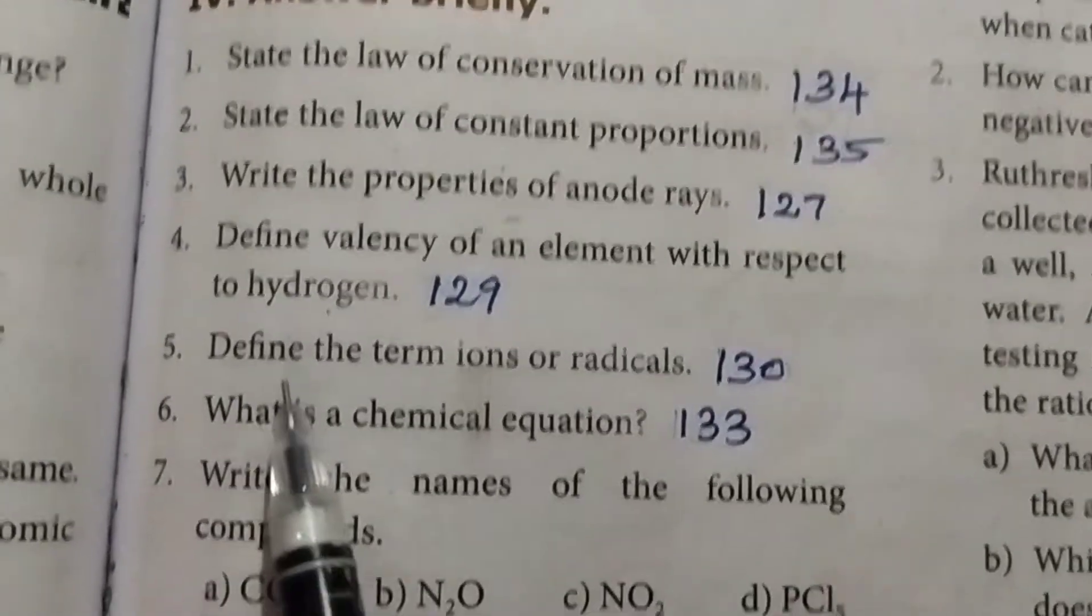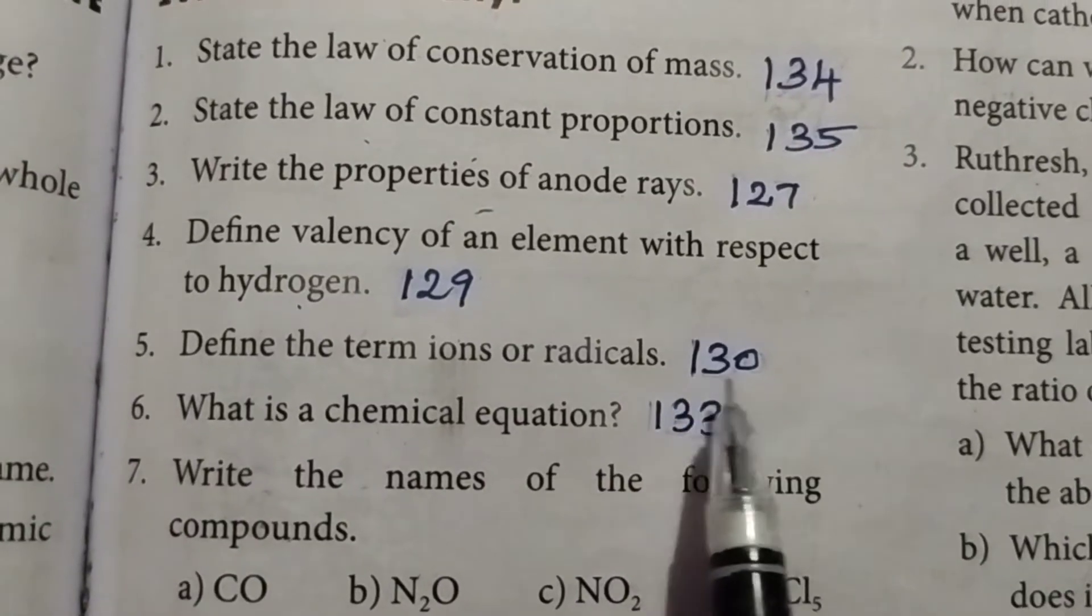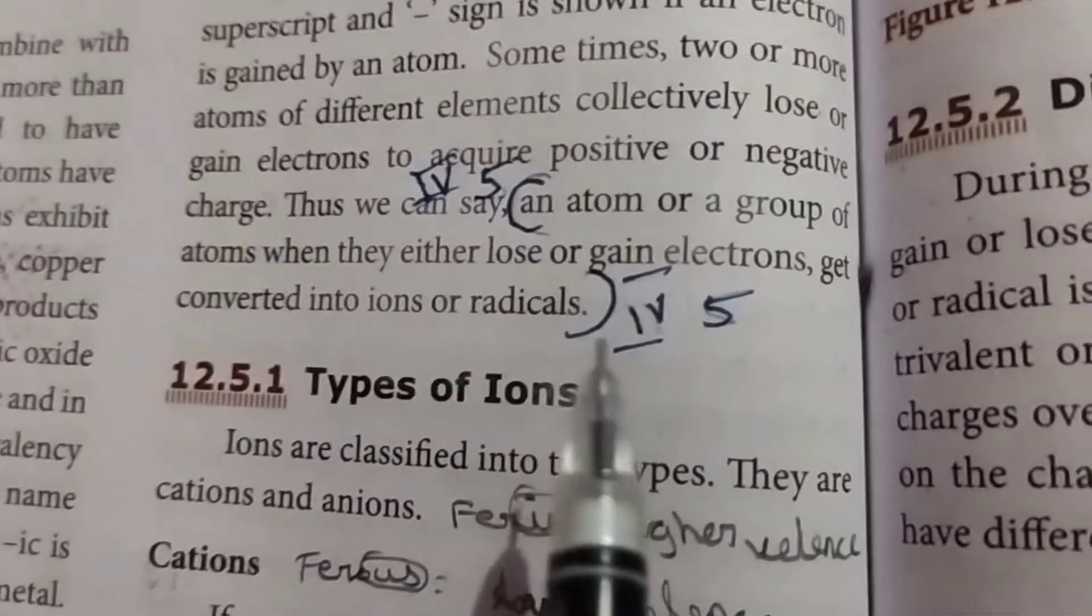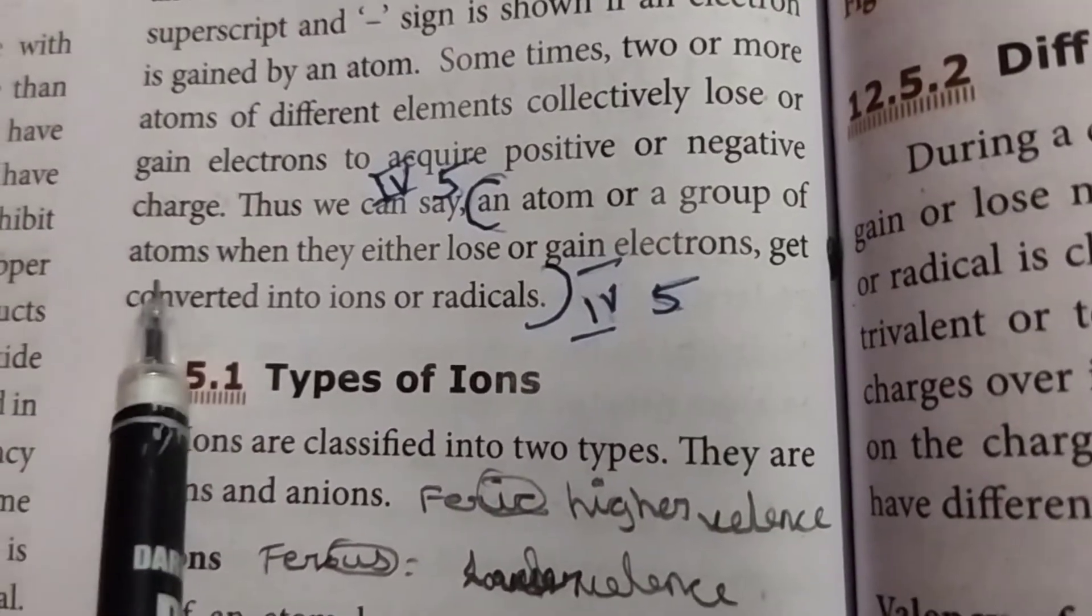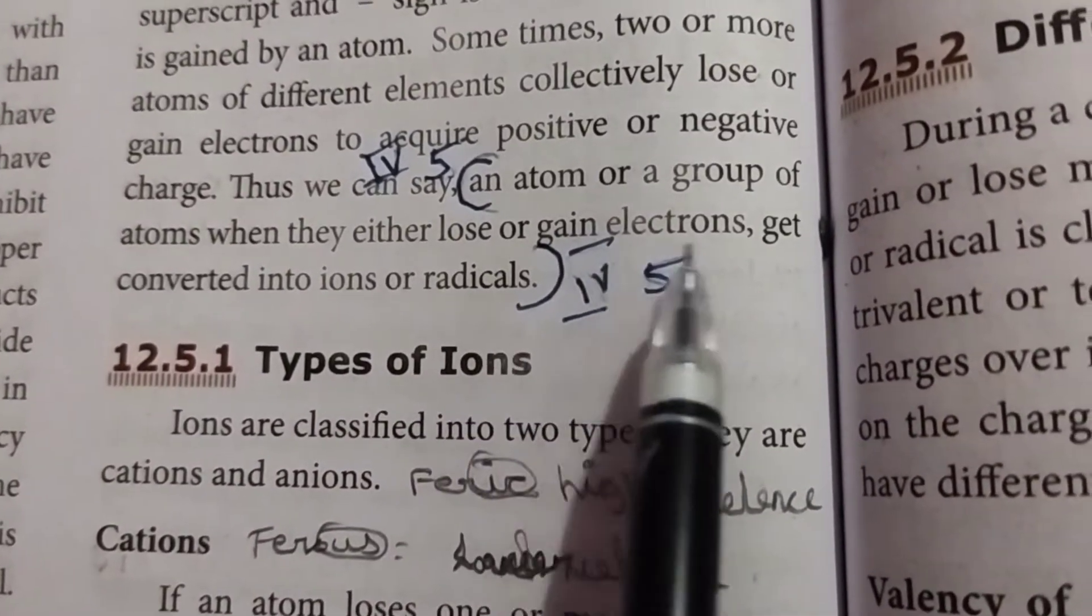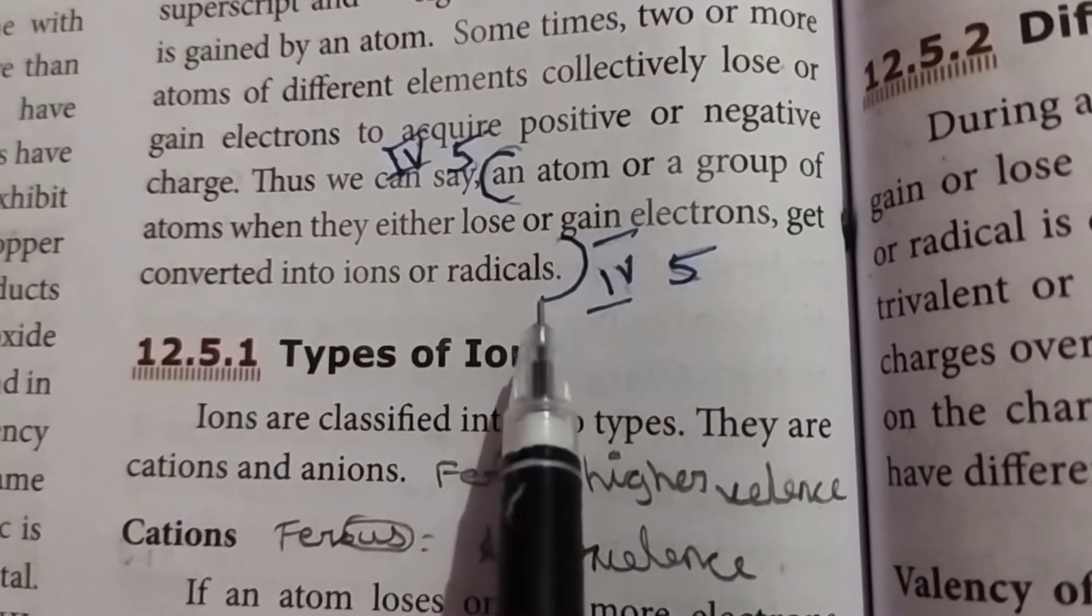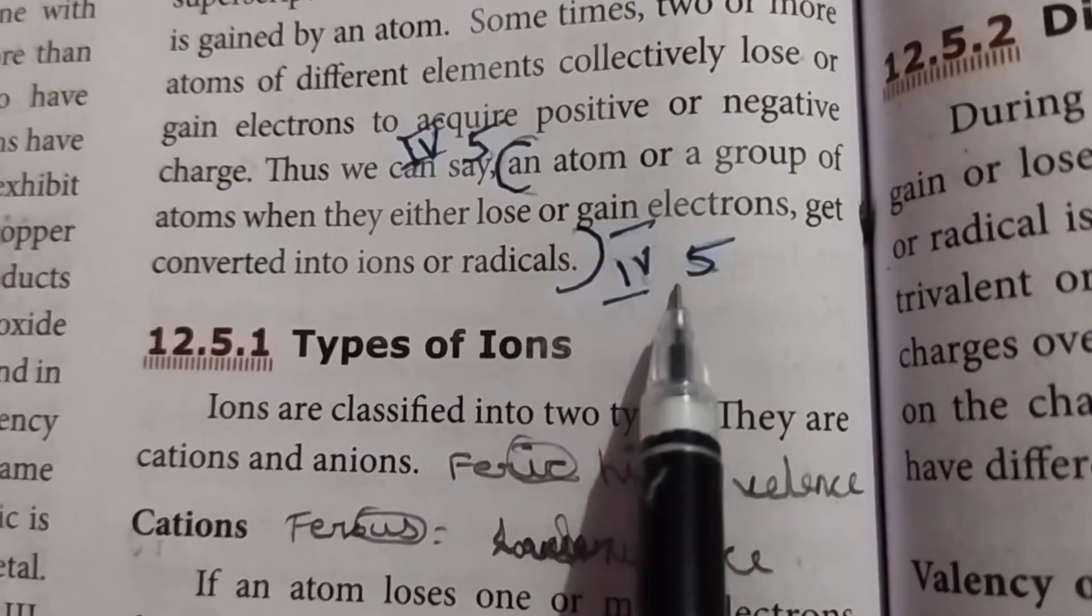Fifth question: define the term ions or radicals. Take page number 130. An atom or a group of atoms, when they either lose or gain electrons, get converted into ions or radicals. Fourth Roman letter, fifth question answer.